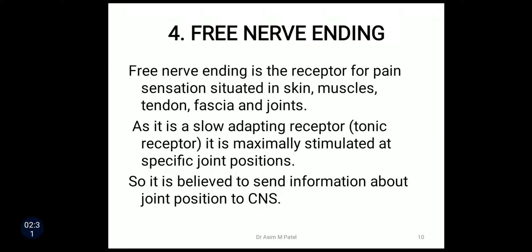The fourth one is free nerve ending. Free nerve ending is the receptor for pain sensation which is situated in the skin, muscles, tendon, fascia and joints. As it is a slow adapting receptor, that is a tonic receptor, it is maximally stimulated at specific joint positions. So it is believed to send information about joint position to the central nervous system.